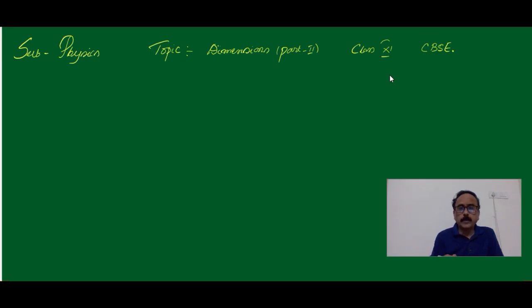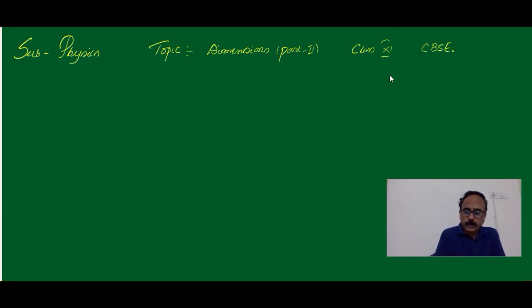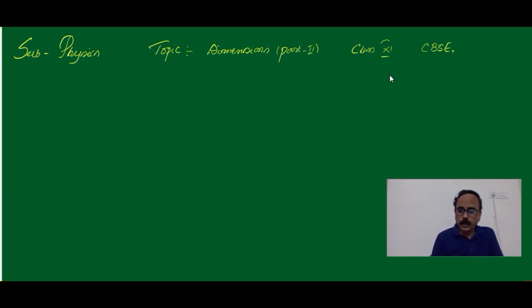In Dimensions Part 1, we have written the Dimensional Formula for some physical quantities. Now let's continue to write the Dimensional Formula for some more physical quantities.